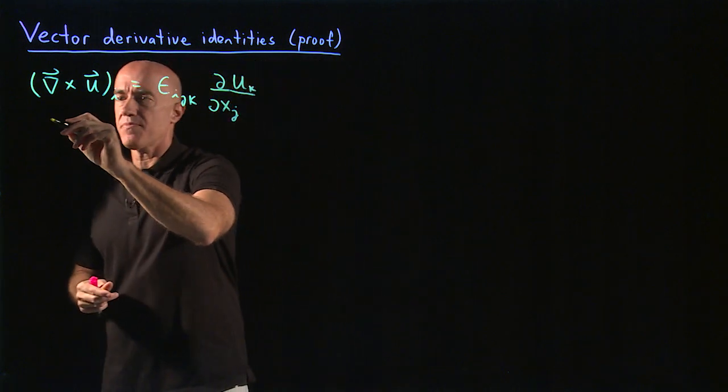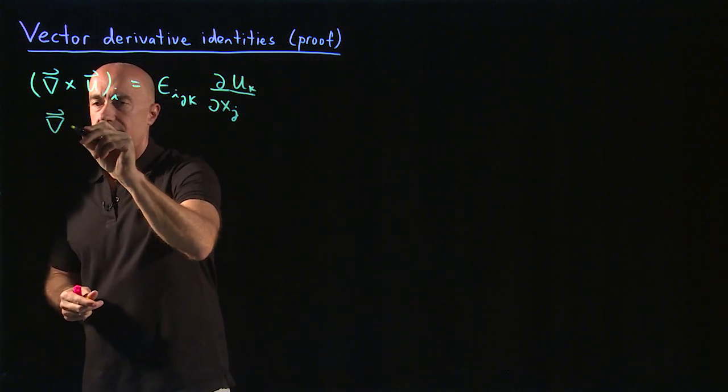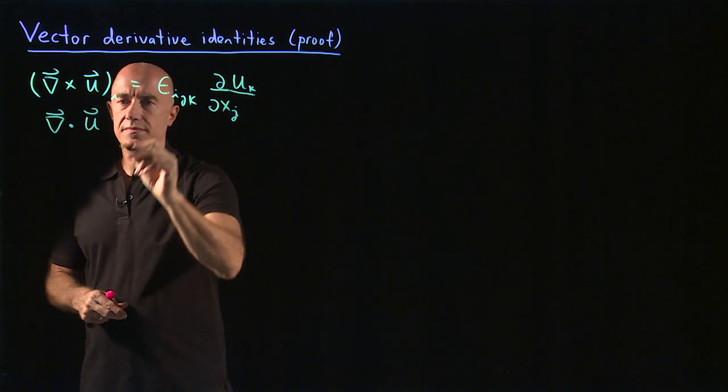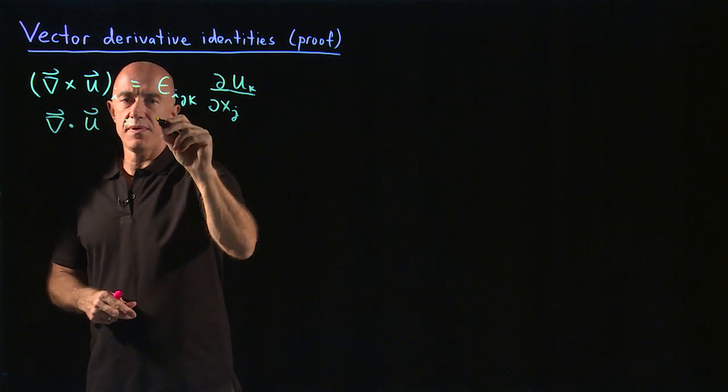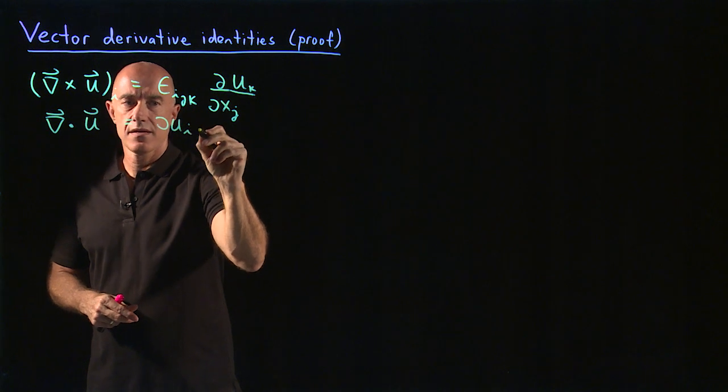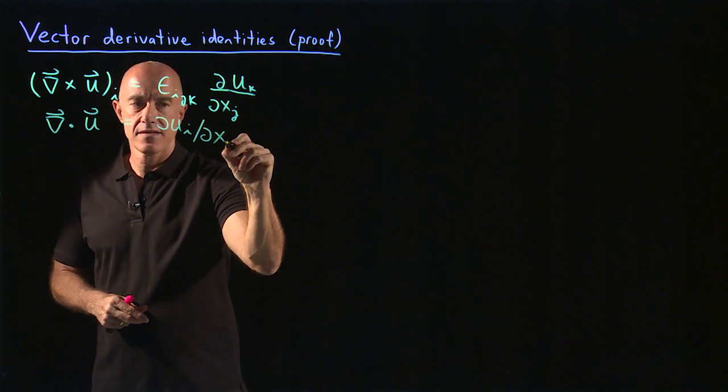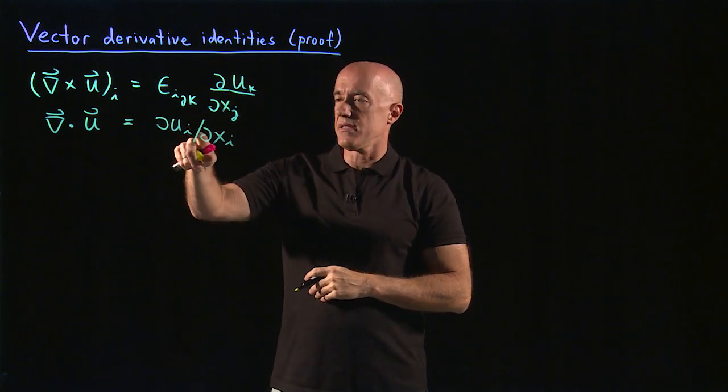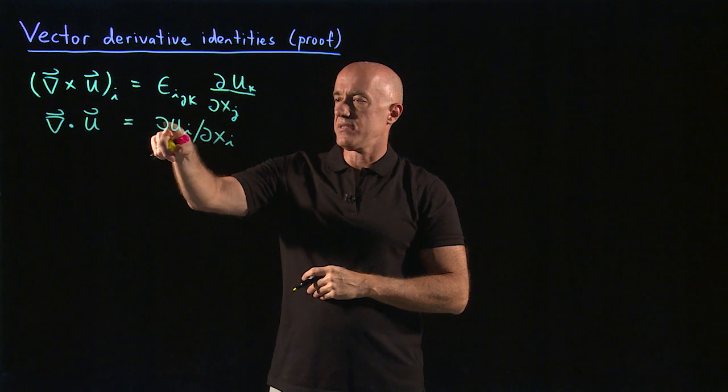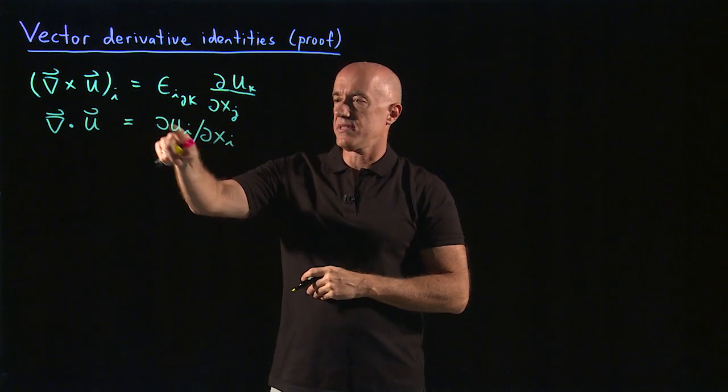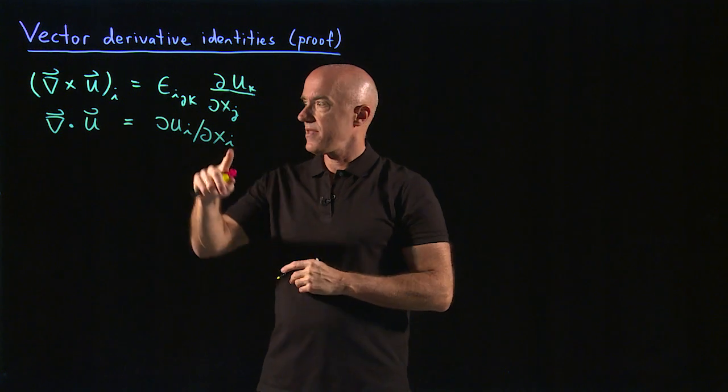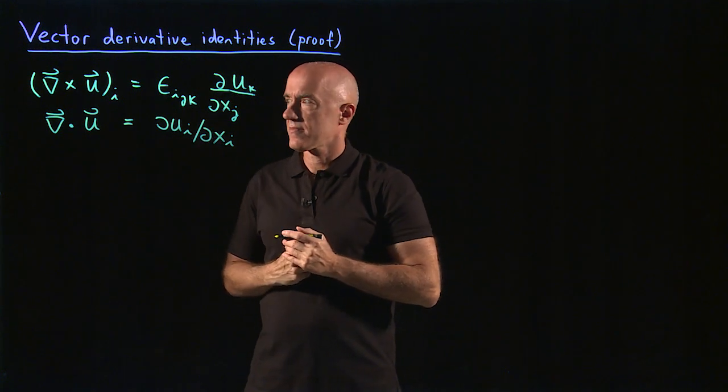How about the divergence of u? Well, this would be du_i/dx_i. And here we're summing over i. So that would be du_1/dx_1 plus du_2/dx_2 plus du_3/dx_3, which is the divergence. That's a scalar.